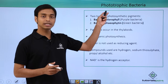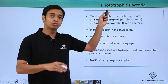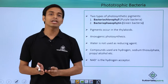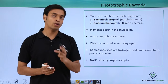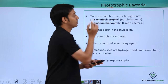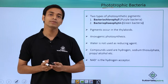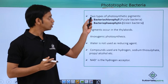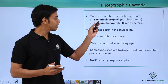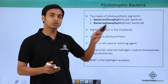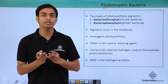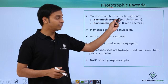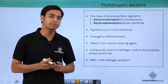So who are the phototrophic bacteria? Bacteria which can make their own food from photons, that is light, are known as phototrophic bacteria. These type of bacteria will have some photosynthetic pigments because of which they can prepare their own food.